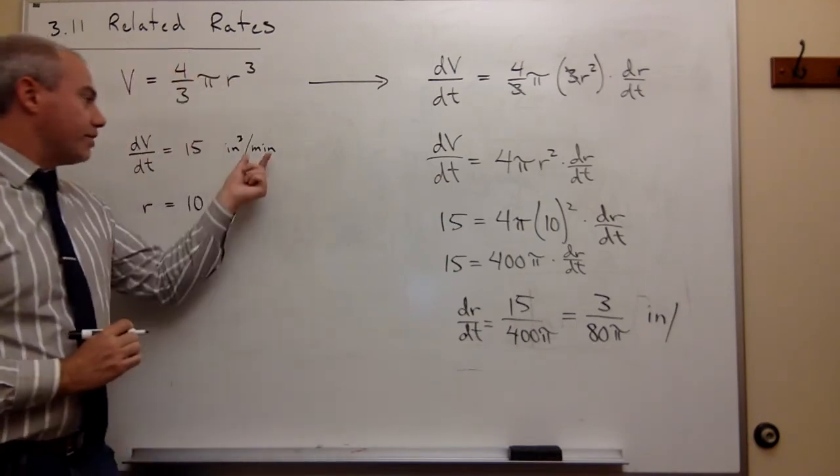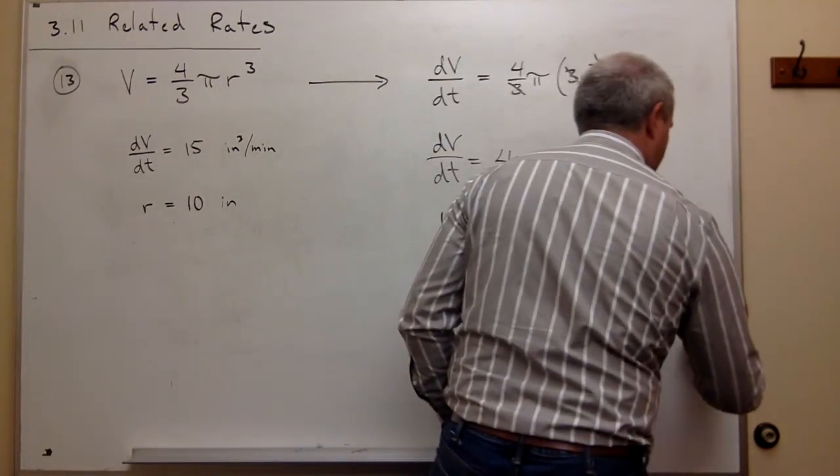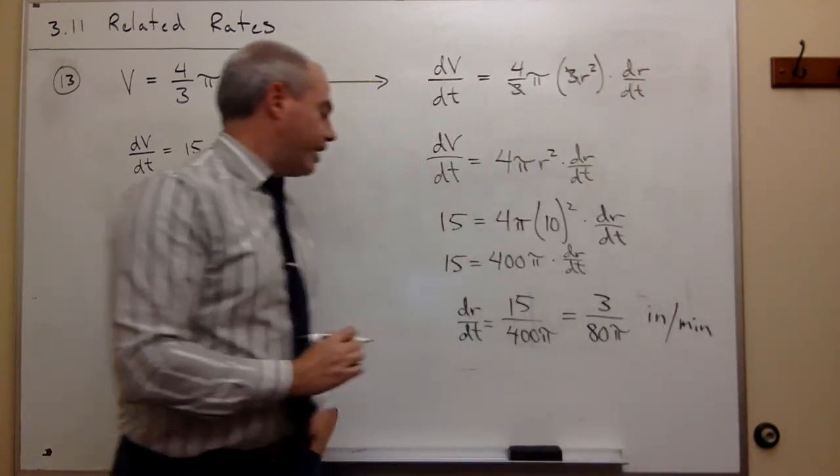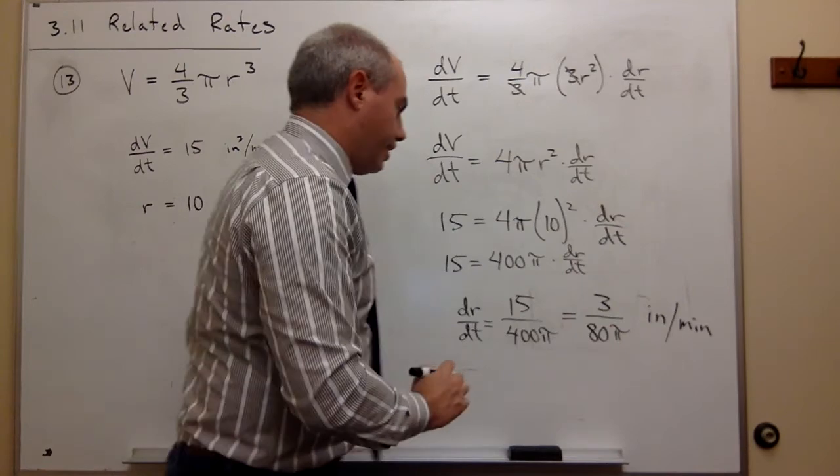So the answer here, dr/dt, is 3 over 80π inches per minute.